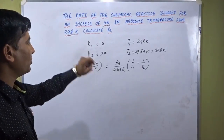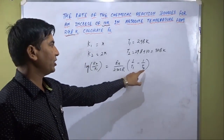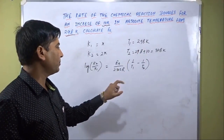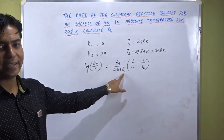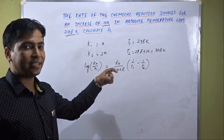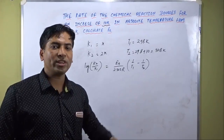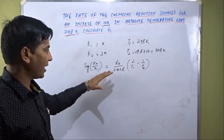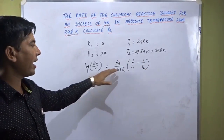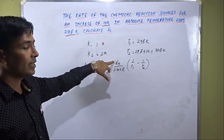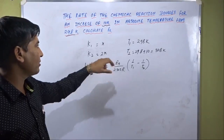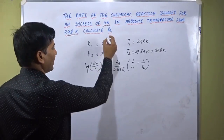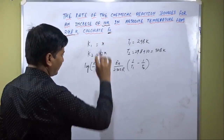The values of k1 and k2 are known, and T1 and T2 values are known. R is the gas constant, equal to 8.314. Therefore, we can plug in these values into this formula and calculate activation energy, that is Ea.